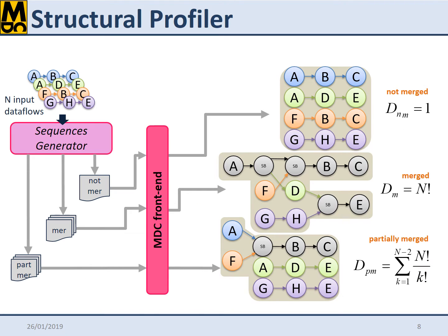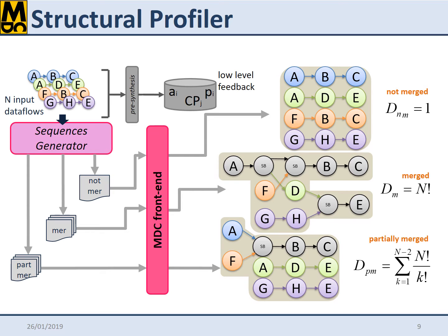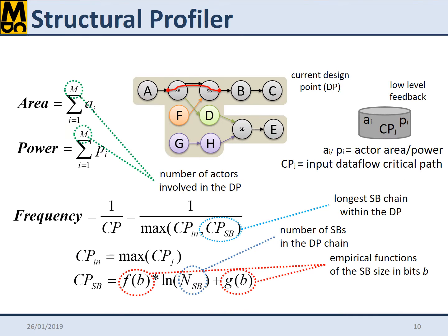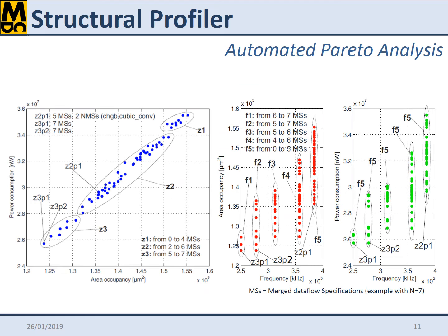To tackle these issues, the MDC Structural Profiler explores the entire space of design points, corresponding to different numbers of Dataflow specifications kept in parallel, from none to all. The design points, exploiting an a priori library characterization, are evaluated in terms of area, static power, and frequency. Numbers are determined at the Dataflow level and used for an automated Pareto analysis of the design space.